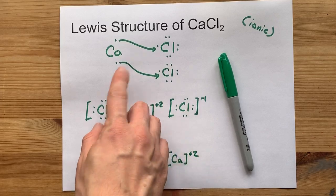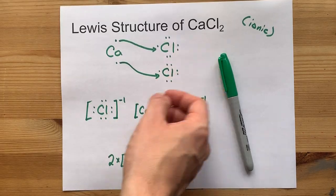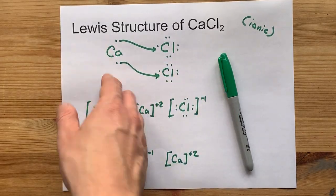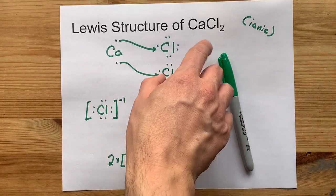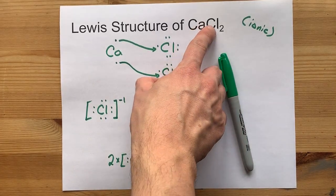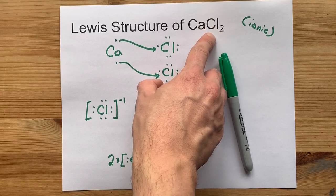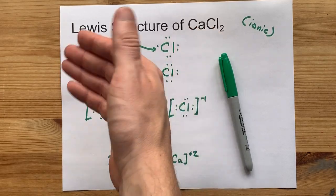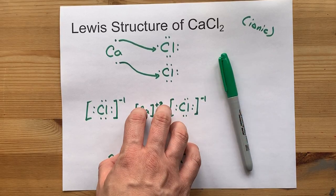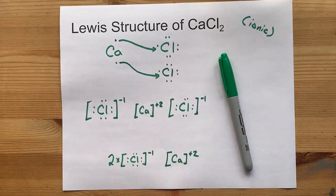The last thing I want to point out. You needed two chlorines to absorb all the electrons that calcium was giving away. That's why the formula is CaCl2. Two chlorines for every calcium. It's a beautiful thing. Just like you are my friends. Best of luck.